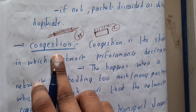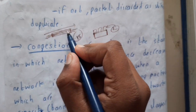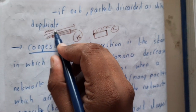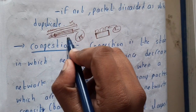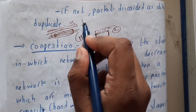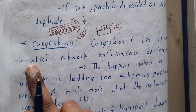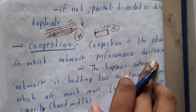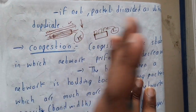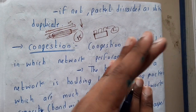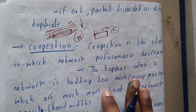Due to congestion, a journey that used to take 10 minutes now takes 20 minutes, wasting 10 minutes. So congestion degrades performance. Congestion is a state in which network performance decreases. Similarly, if congestion happens in a network, the transfer of packets from one node to another might take longer than expected.